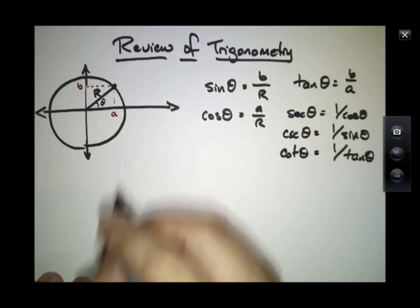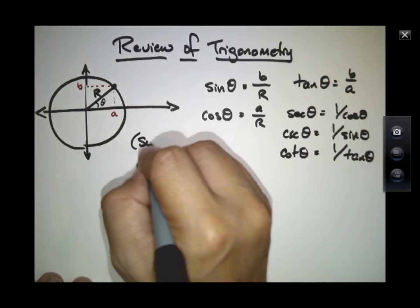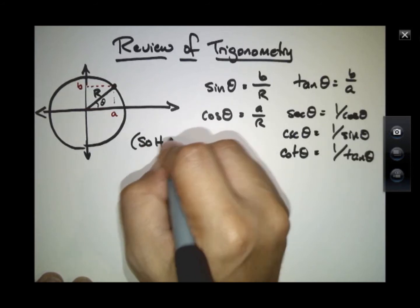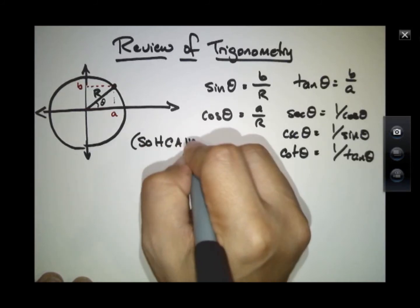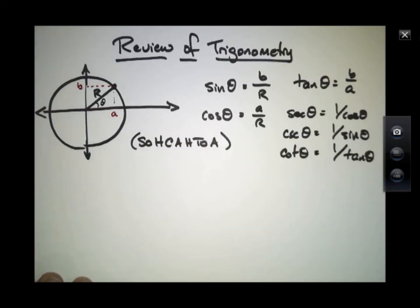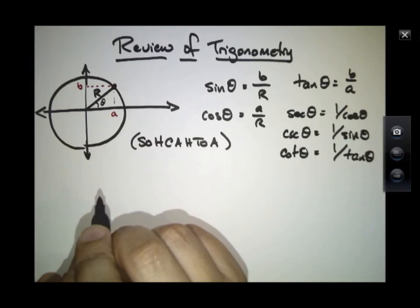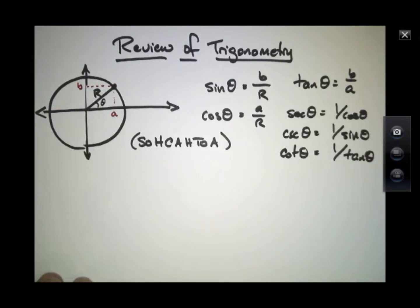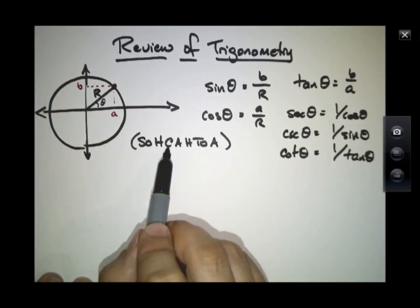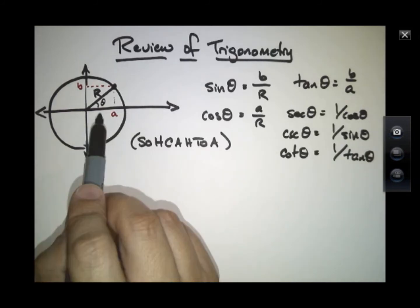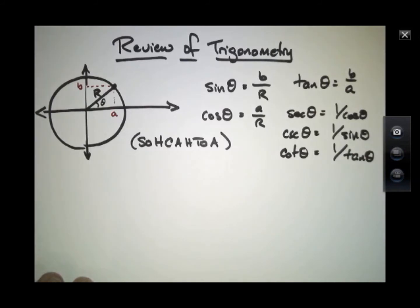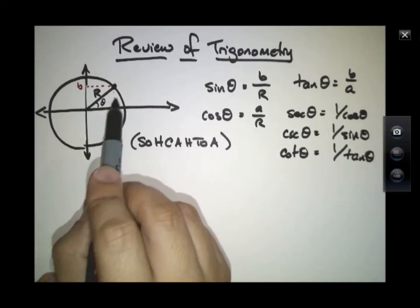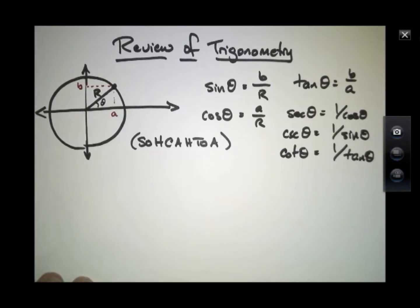But the important thing is to remember this acronym, SOHCAHTOA. So sine is the opposite over this radius, which is sometimes called the hypotenuse. The cosine is defined as the adjacent side over that hypotenuse, and the tangent is defined as the opposite over the adjacent.